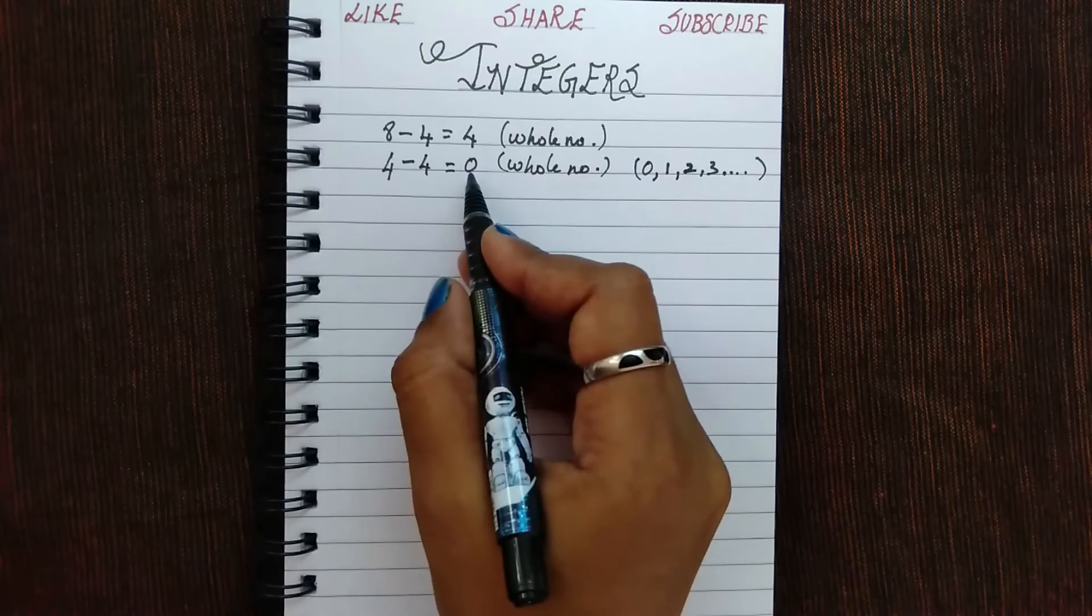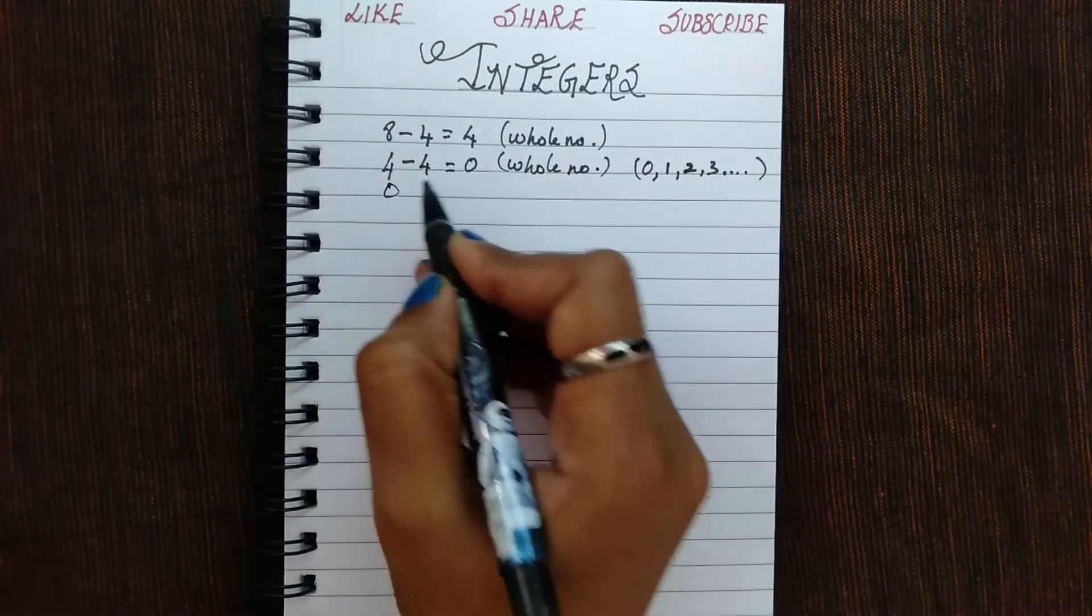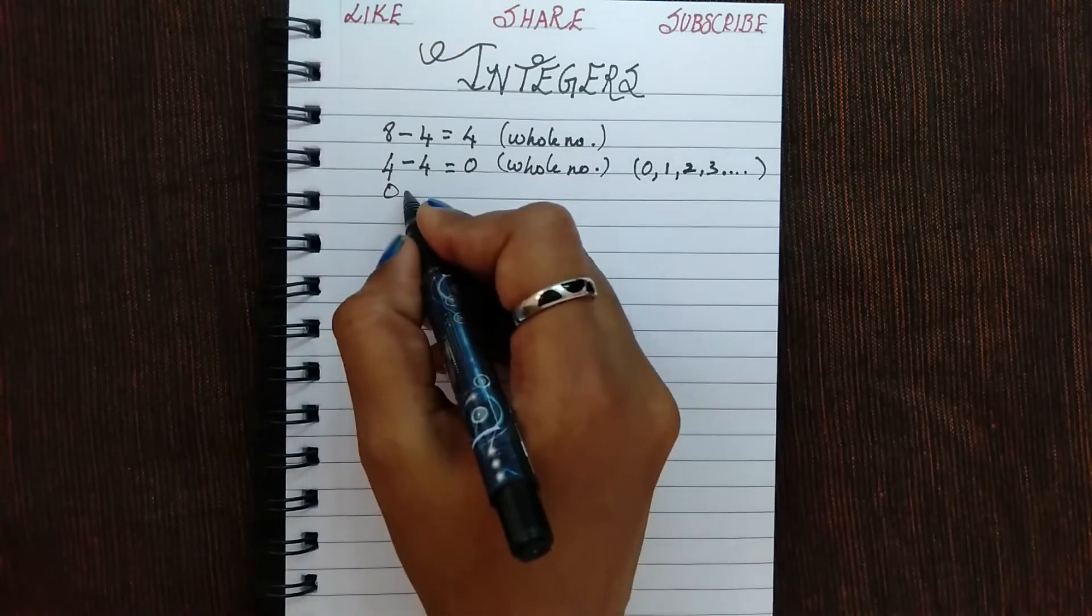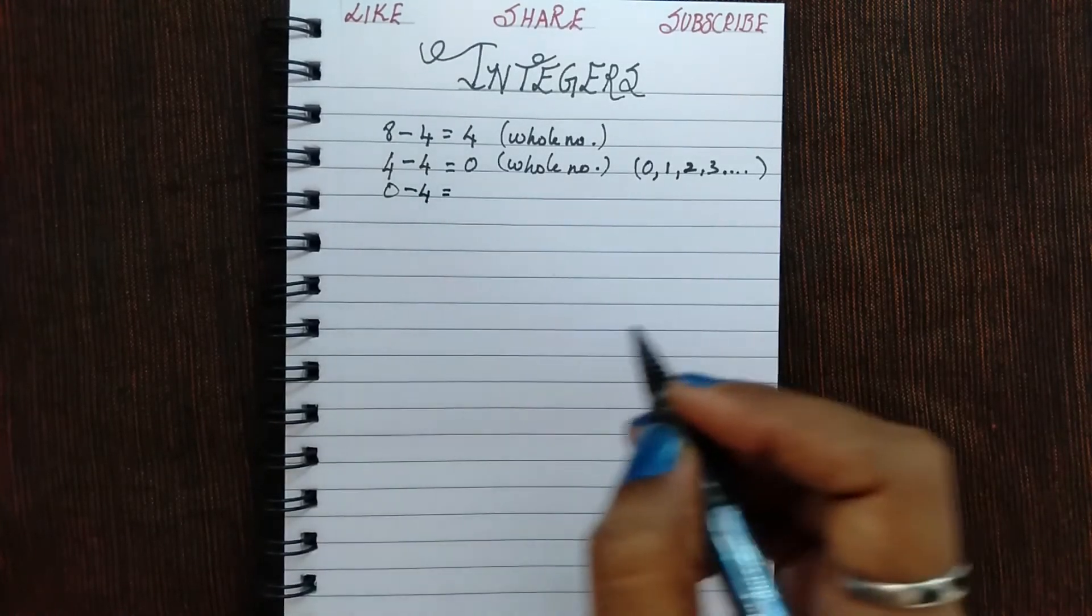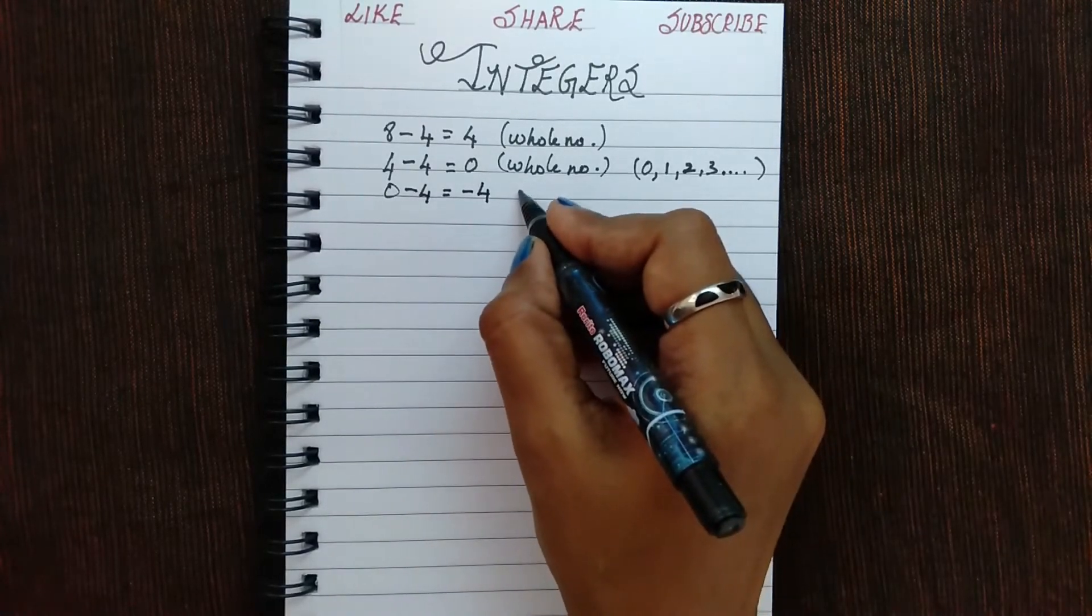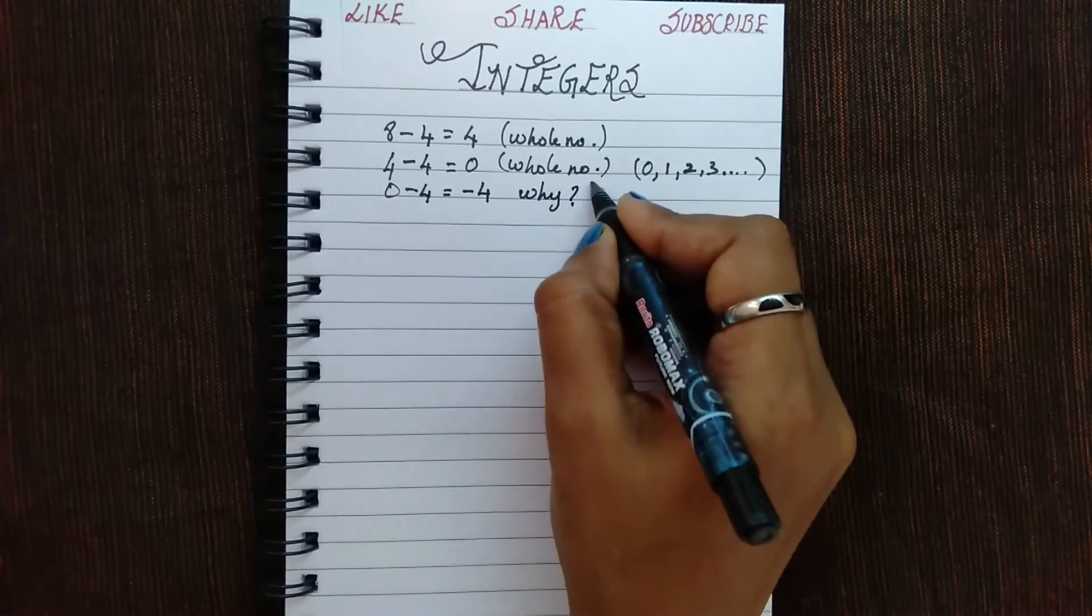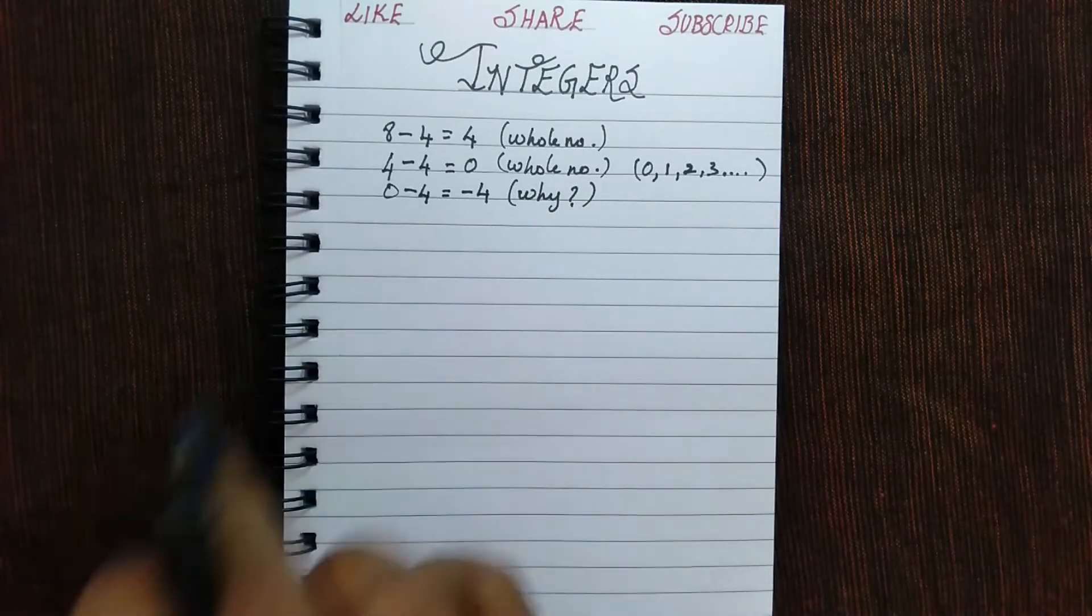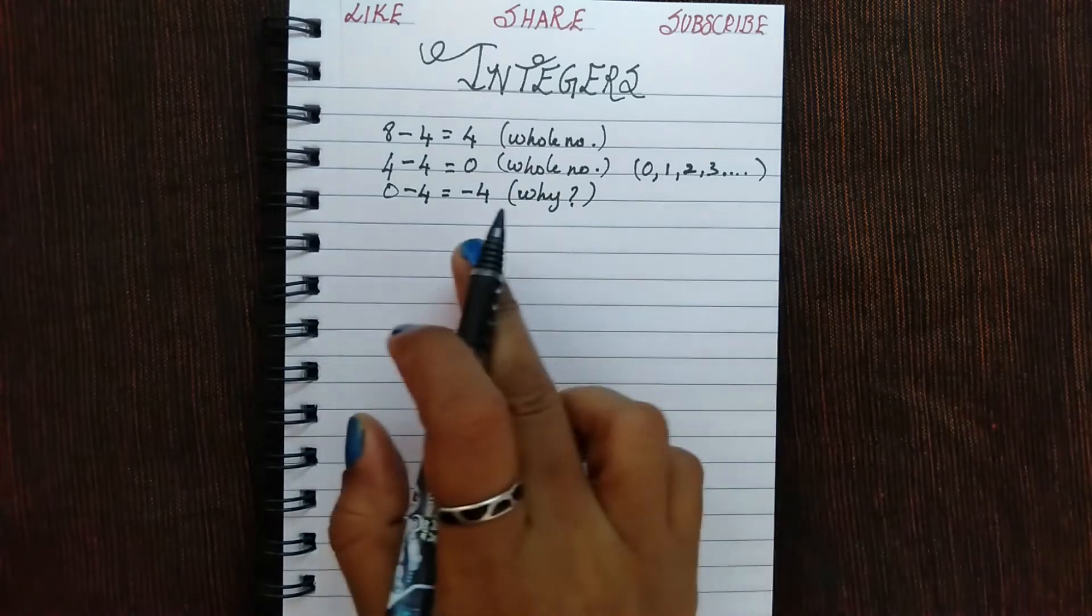So now let's take this 0 here. What if we want to subtract a 4 again from the 0? Then what is your answer? Your answer is minus 4. Why minus 4? It's because you're already left with the 0 and you don't have anything to subtract from it, right? So your answer is a negative of that number.